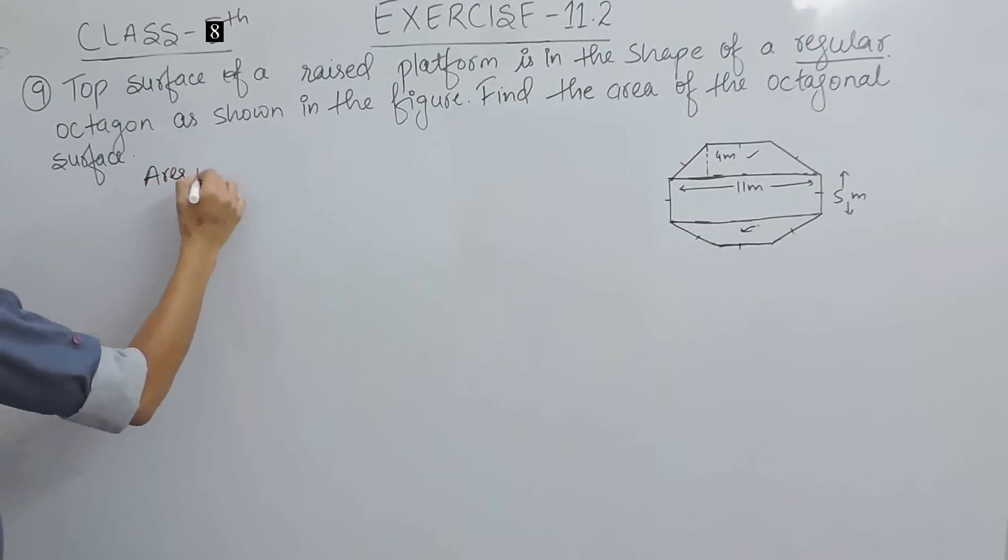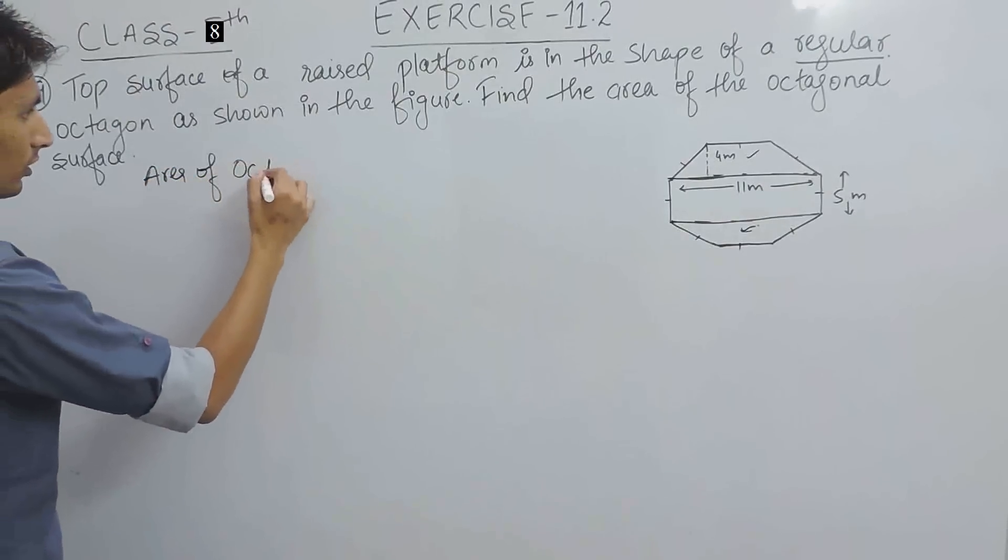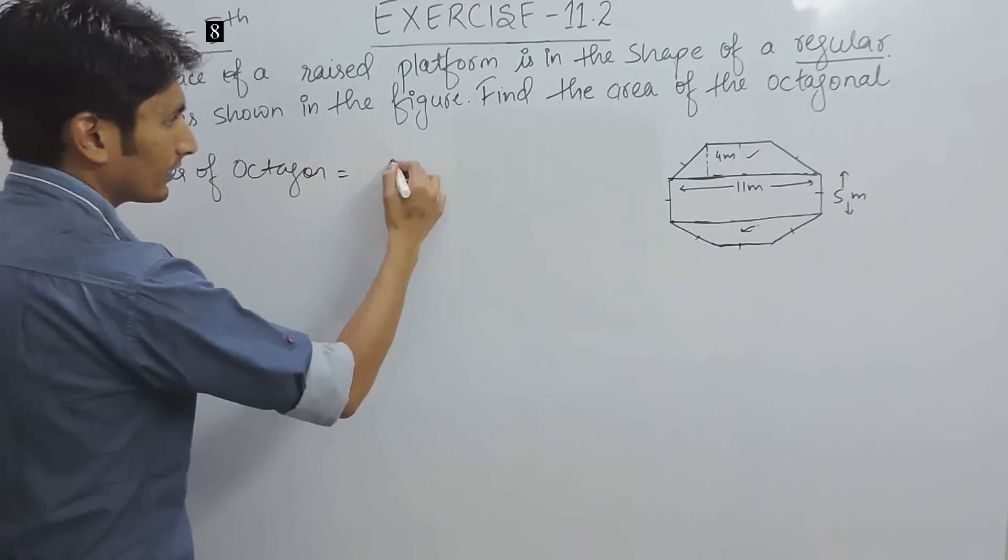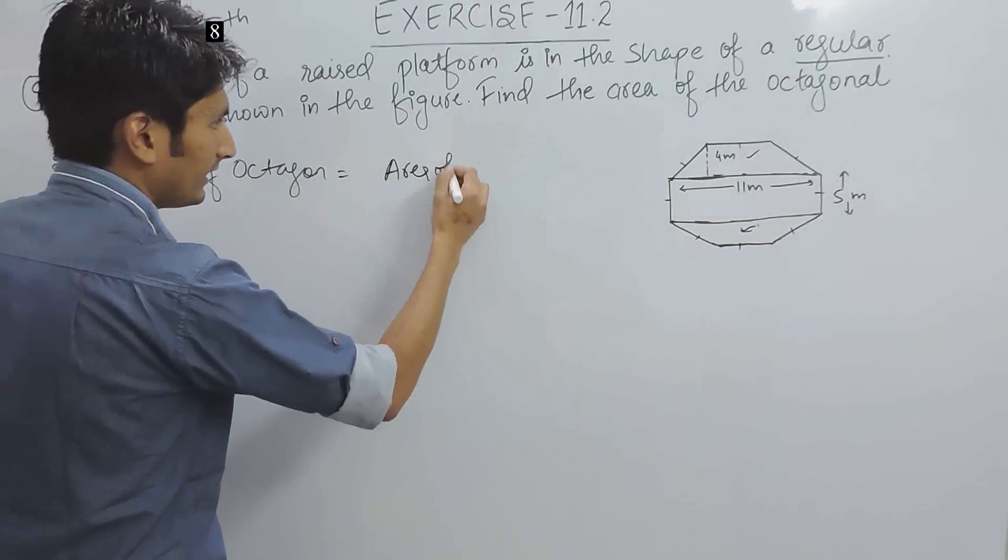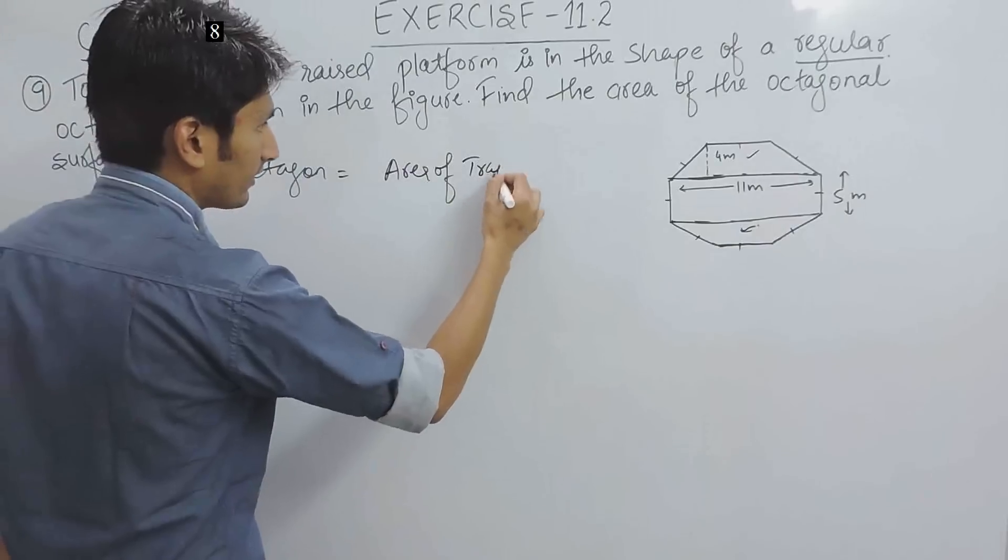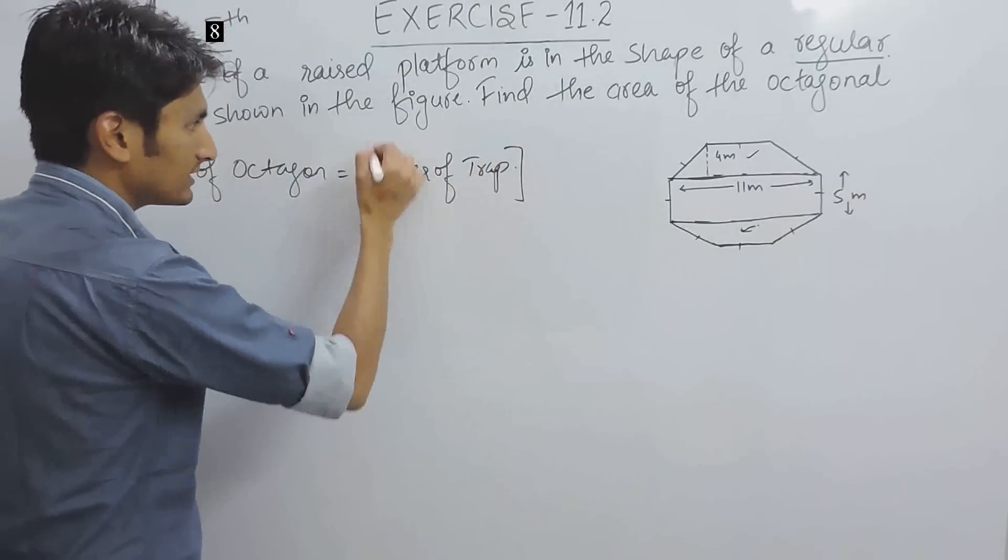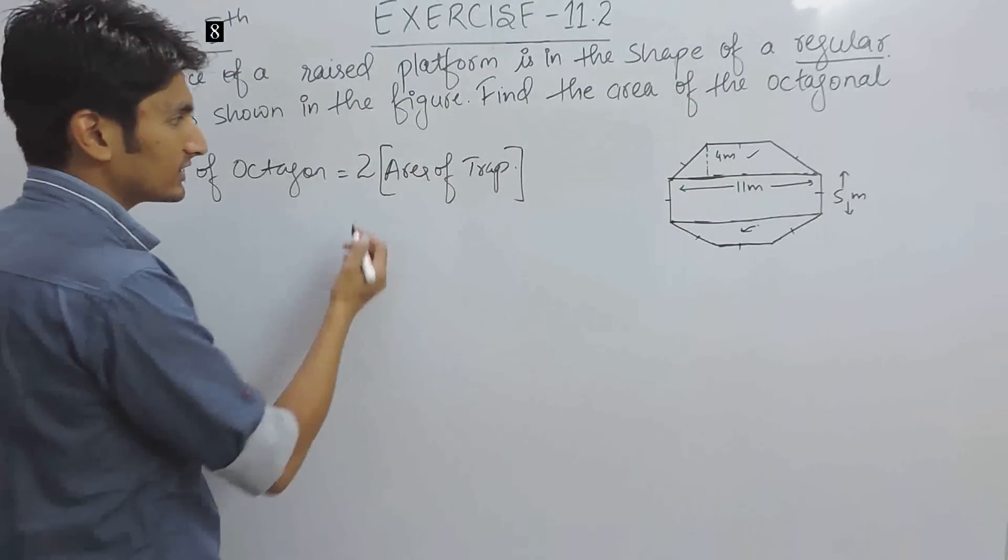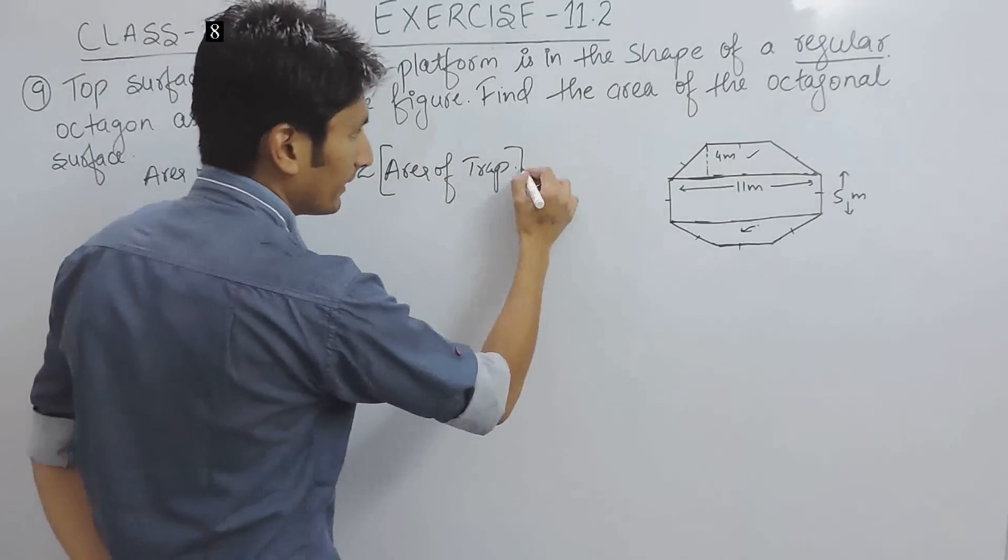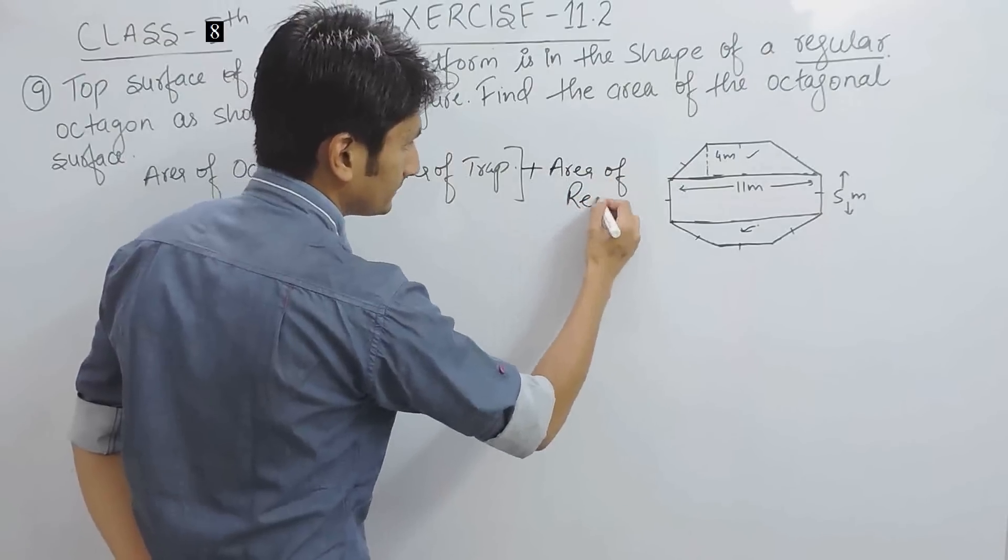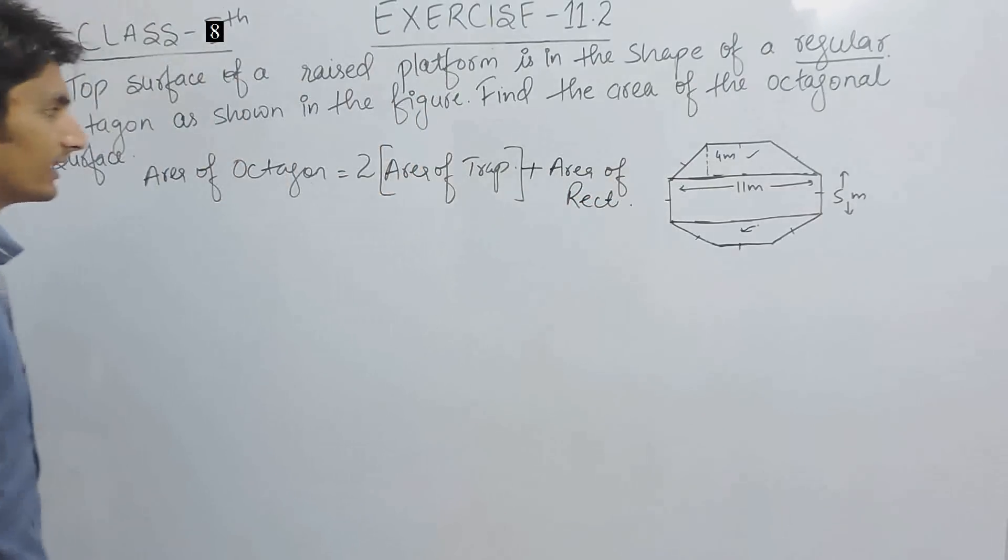We can write area of octagon is basically equals to area of trapezium. And because there are two trapezium, so we have to multiply it with two plus area of rectangle. So, this is the area of the octagonal surface.